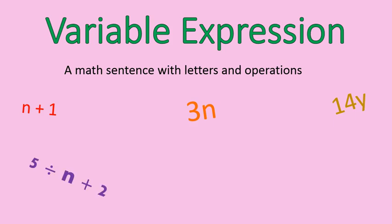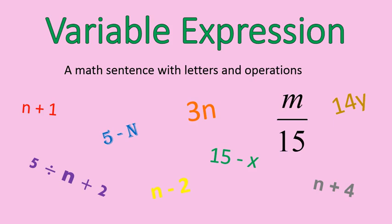This one here has two operations: division and addition. These are all examples of variable expressions — a letter and some kind of operation. And the letter just represents a number, some number that might change. It varies, hence the word variable.